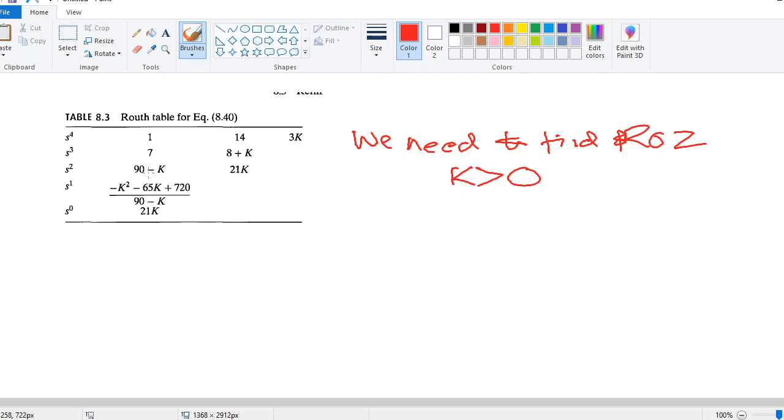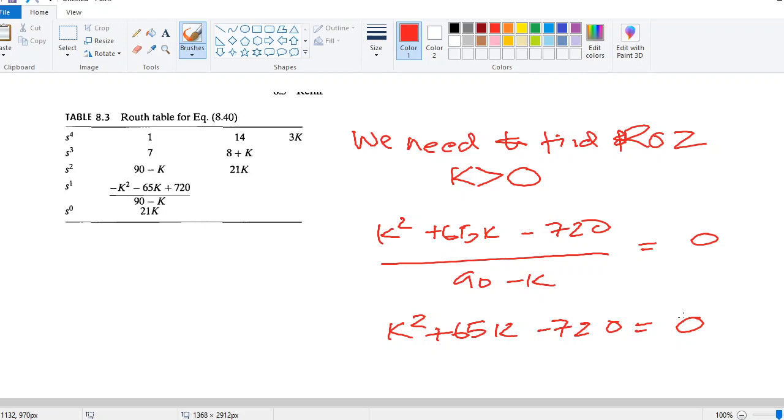With the first term, it is okay. But with the second term, K needs to be zero, which is not agreeing with the condition that we have. So, the next equation that we have is this one: K squared plus 65K minus 720 divided by 90 minus K. If you multiply throughout the negative sign, you get it as K squared plus 65K minus 720, the whole divided by 90 minus K. And if that is equal to zero, you get an equation: K squared plus 65K minus 720 equals zero.